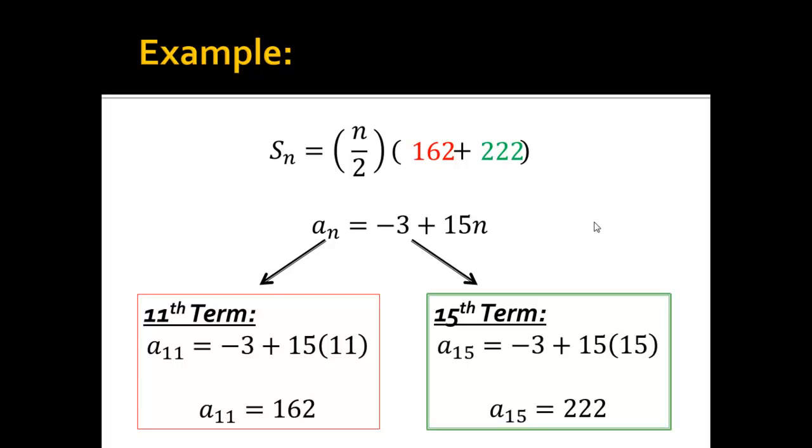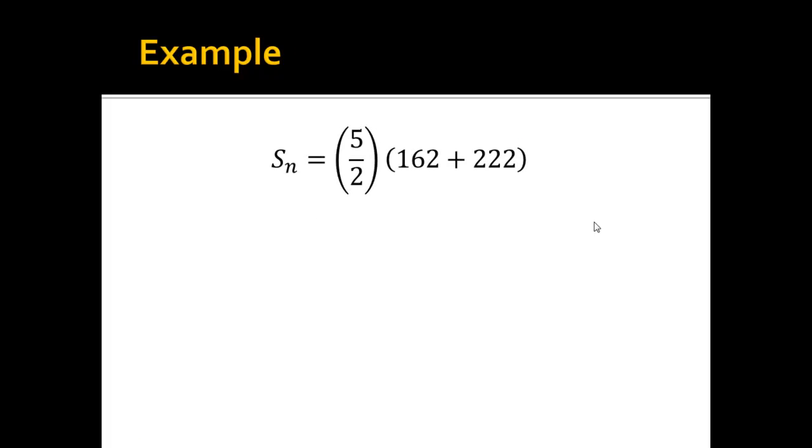All right, so, now the number of terms in the series is five, because it's eleven, twelve, thirteen, fourteen, fifteen. It's everywhere I see an n. Put a five in its place. And basically what I'm doing, I'm just adding the first and the last term, right, and taking n and dividing it by two, and multiplying those numbers together. That's it. And I come out with nine hundred and sixty.